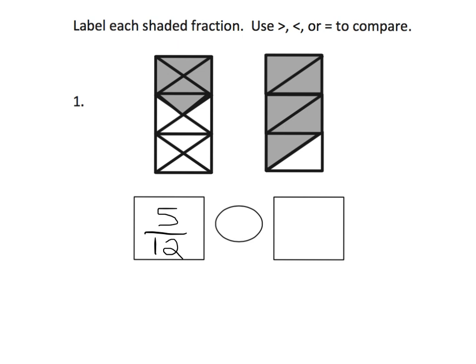And then in the same kind of way, we're going to count over here — 1, 2, 3, 4, 5, 6 — so we have 6 pieces, and 5 of them are shaded in, so that's 5 sixths. Now, which is bigger — 5 sixths or 5 twelfths? Clearly, 5 sixths is more shaded in. These are the same size wholes, so 5 sixths is way more shaded in than 5 twelfths.